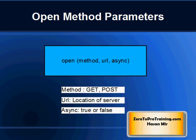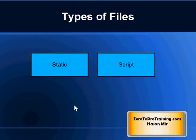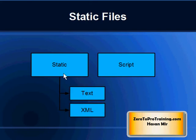You can refer to a static file or a script file in the Open method. The file has to be located on the server. Examples of static files are text and XML files. If a static file is referenced, the server will pass the information in the file as-is back to the browser.